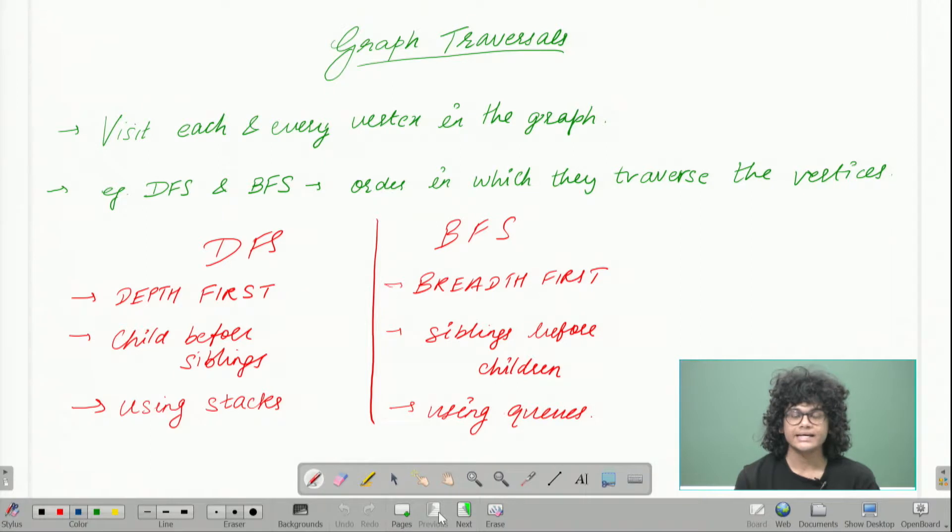What graph traversal means is we want to visit each and every vertex or node in the graph. Once we have completely visited all the vertices, that is when it is said that we have traversed the complete graph. And there are different techniques to do so. How these techniques differ from each other is the order in which they traverse the graph.